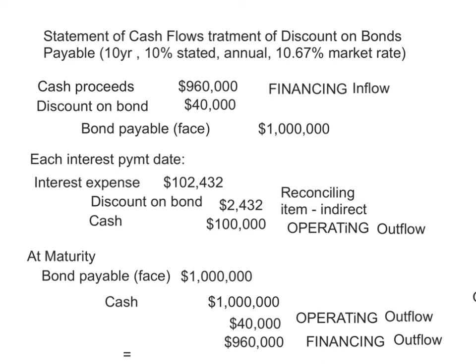When we first received the proceeds, that was recorded in the statement of cash flows as a financing inflow — which we know from looking at the balance sheet and figuring out which sections go with which activity. Bonds payable is a financing activity.